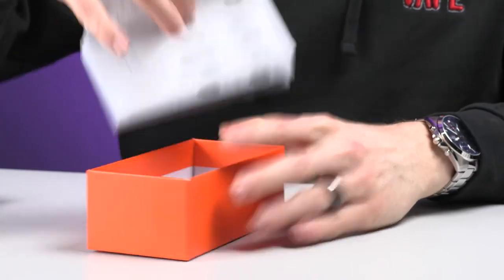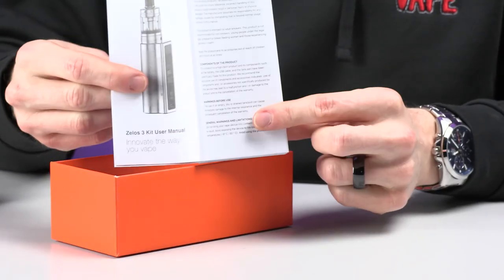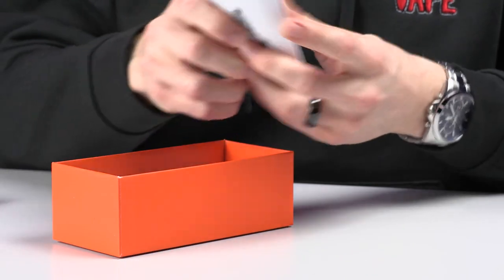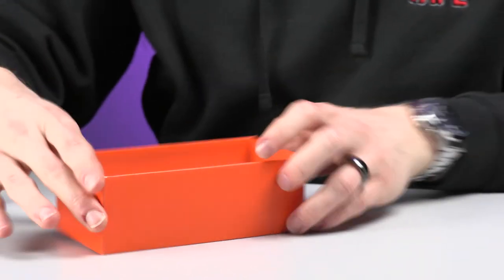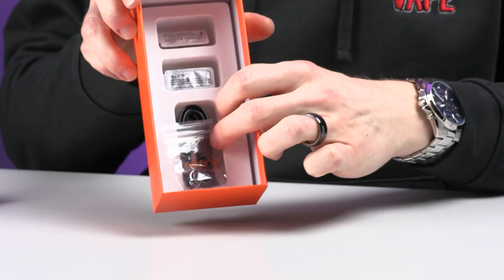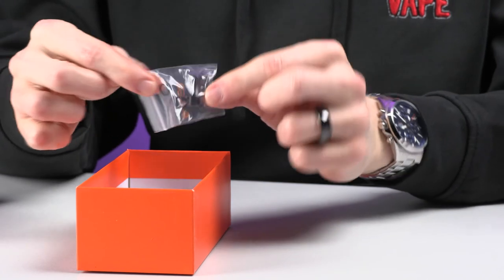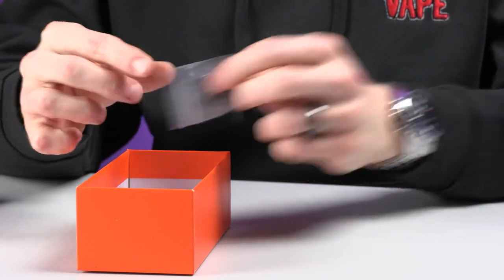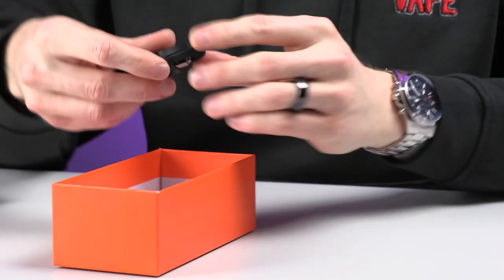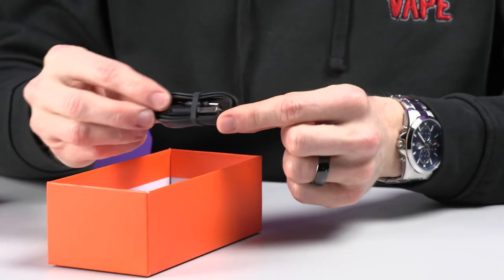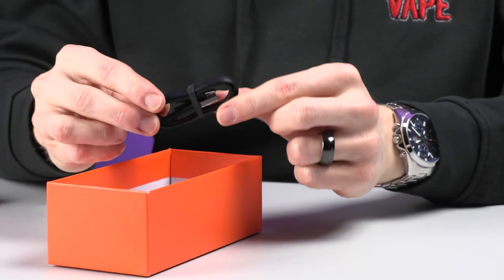Let's see what else we get first. We do get a manual just here, so make sure to have a good old read through that, but we will be covering it today anyway. And then underneath, we get some accessories. Inside here, we get spare O-rings and a different style mouthpiece. We get a USB-C to USB-A charging cable, so make sure to charge your device with that one.